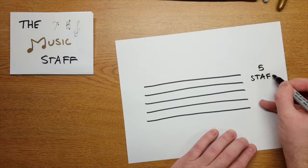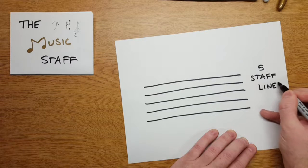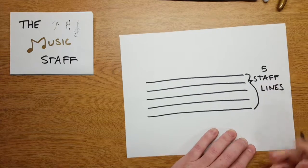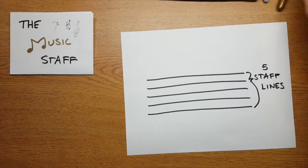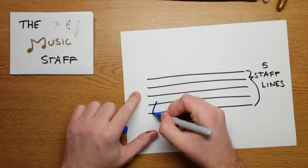These are the staff lines. It's where the notes and rhythms go. Notes higher on the staff or further away from you would be higher. Notes closer are lower.